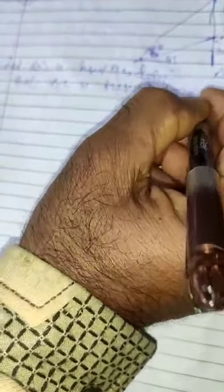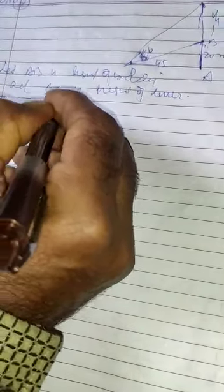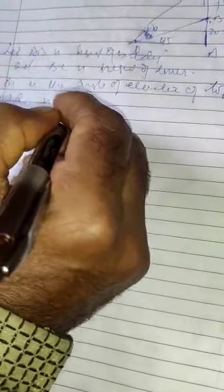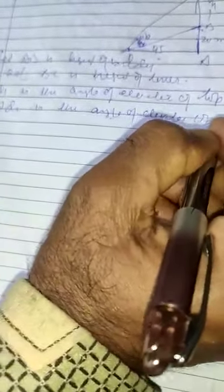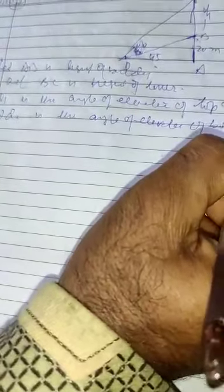Theta 1 is the angle of elevation of the top of the tower, and theta 2 is the angle of elevation of the bottom of the tower.